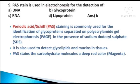The ninth question: PAS stain is used in electrophoresis for the detection of — options: DNA, glycoprotein, RNA, or lipoprotein. The answer is option B, glycoprotein. PAS staining, or periodic acid-Schiff staining, is commonly used for the identification of glycoproteins separated on polyacrylamide gel electrophoresis in the presence of sodium dodecyl sulfate. It is also used to detect glycolipids and mucins in tissues. PAS stains the carbohydrate molecules a deep red or magenta color.